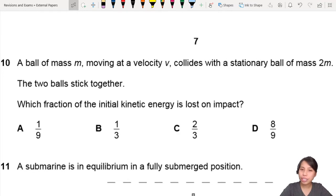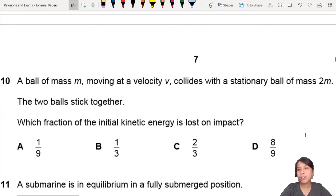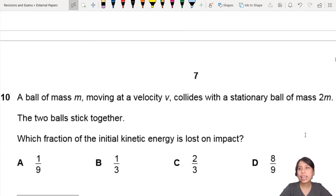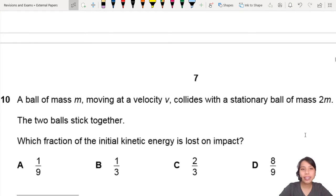This question is a collision question without a picture, so we better draw it out. A ball of mass M moving at velocity V collides with a stationary ball mass 2M. So before collision, it looks like this.